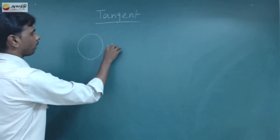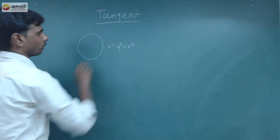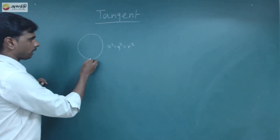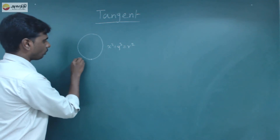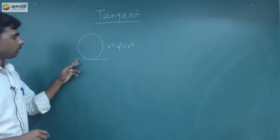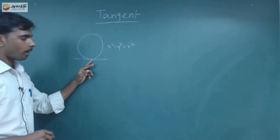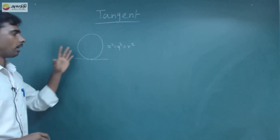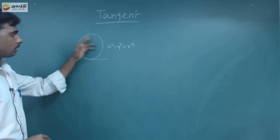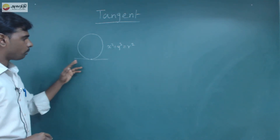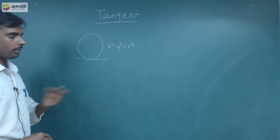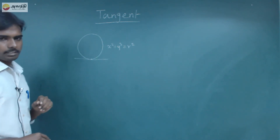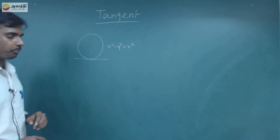The circle equation is x² + y² = r². Here we are going to talk about a circle and a single point, so we are going to talk about tangent.